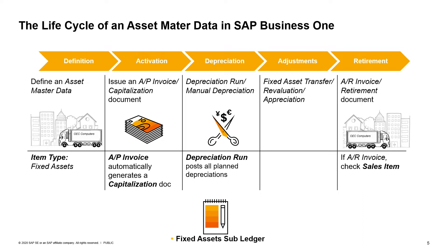When a user executes a depreciation run, the system carries out the depreciation planned up to the specified date. Additional Fixed Assets documents support the need for adjustments during the life cycle of a Fixed Asset's item type — Fixed Asset transfers, revaluation, or appreciation of an asset. In order to decide which adjustment documents to use, you need to verify together with the client accountant what the legal and industry requirements are.